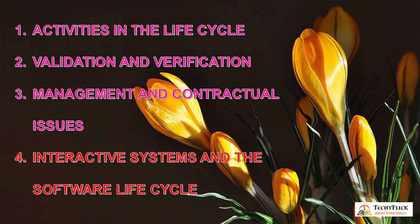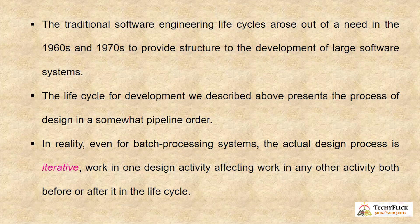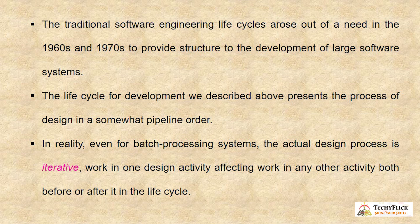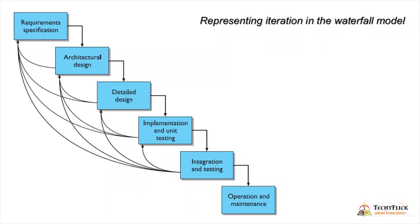Interactive systems and the software life cycle — the traditional software engineering life cycle arose out of a need in the 1960s and 1970s to provide structure to the development of large software systems. The life cycle described above presents the process of design in a somewhat pipeline order. In reality, even for batch processing systems, the actual design process is iterative — work in one design activity affects work in any other activity, both before or after it in the life cycle. This is represented by the sashimi or whatever model, representing the iteration.